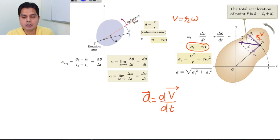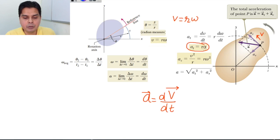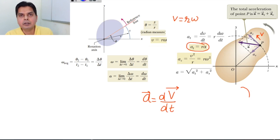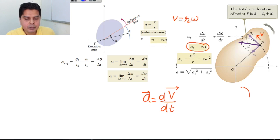This tangential acceleration occurs because the tangential velocity is changing. If the velocity magnitude is constant, aₜ = 0. However, even if the speed is constant, since the particle moves along a curve, the direction of v keeps changing. A change in direction also means acceleration — this is the centripetal acceleration aᶜ = v²/r.